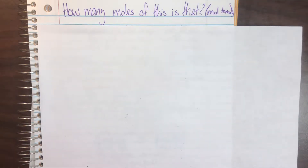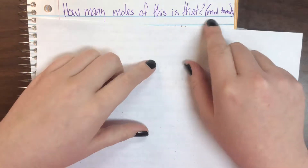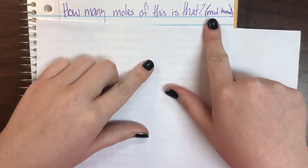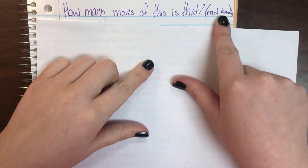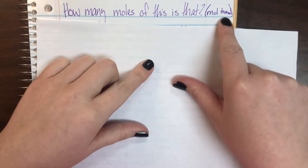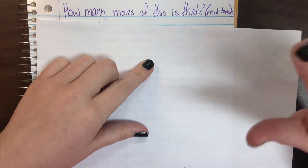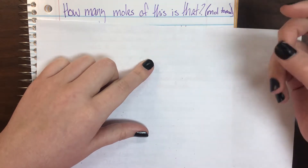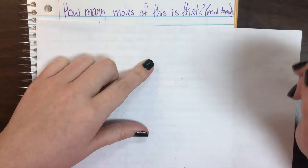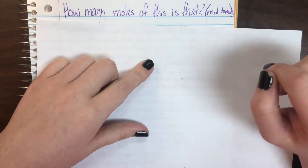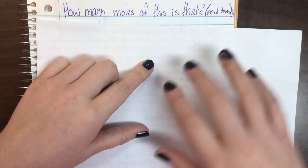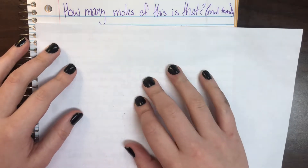You should be on the first clean right side of your notebook that you have available, and you're going to go ahead and title your notes 'How Many Moles of This is That?' And then in a little parenthesis here, I went ahead and wrote 'mole to mole.' This is just to help you find these notes again whenever you need to figure out how to get from moles to moles more directly.